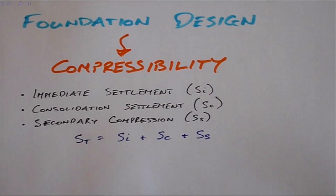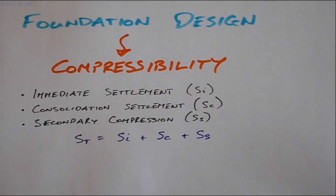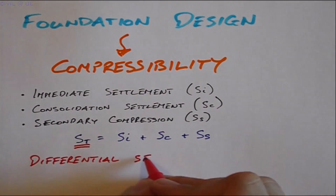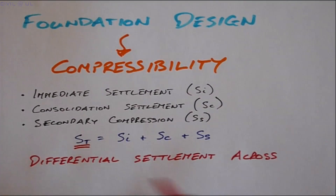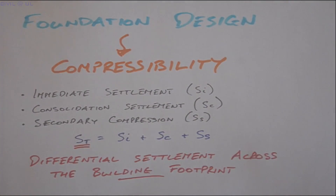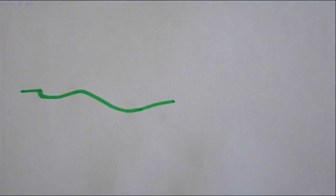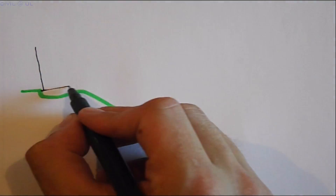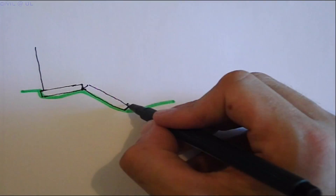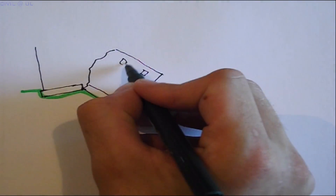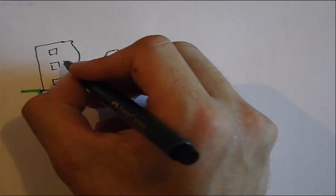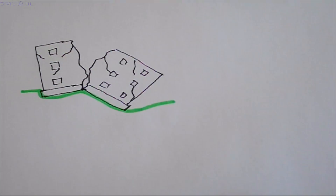It's important that the engineer develops an understanding of these components and is capable of estimating the magnitude of total settlement, in addition to any differential settlement that may occur over the building footprint. History has shown that it is not necessarily the magnitude of total settlement that causes structural problems, but rather the magnitude of differential settlement.